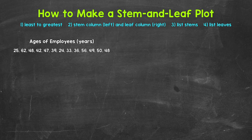We have the ages of employees at a business. The first thing that we need to do is order the data from least to greatest if it's not already done so. This data is not in order, so we will start there. Ordering the data will make everything much simpler once we get to creating the stem and leaf plot.